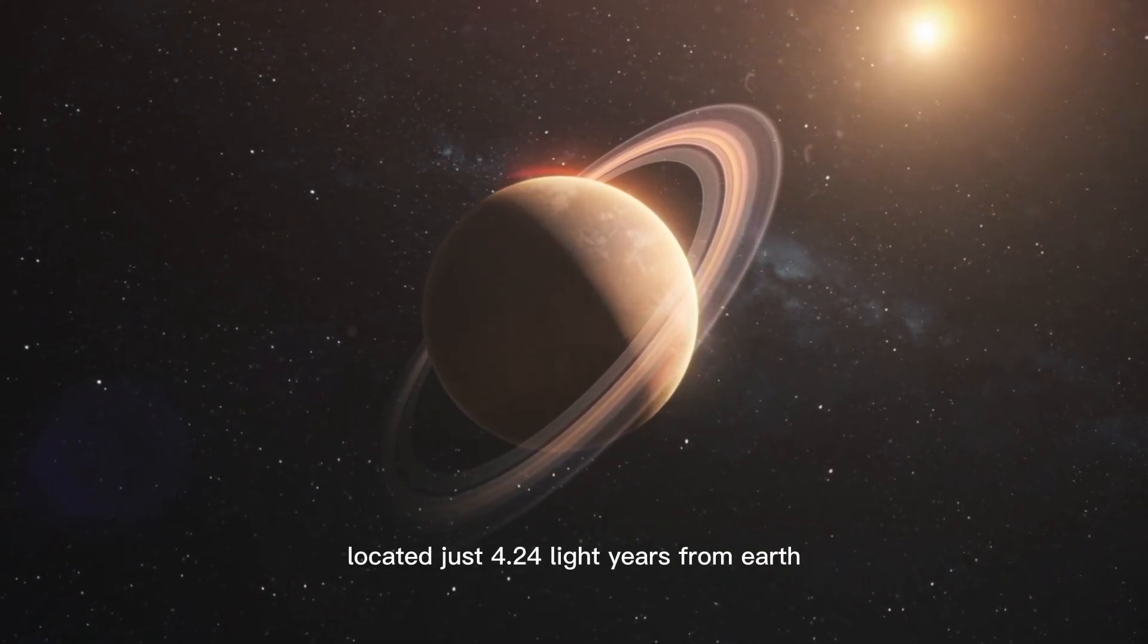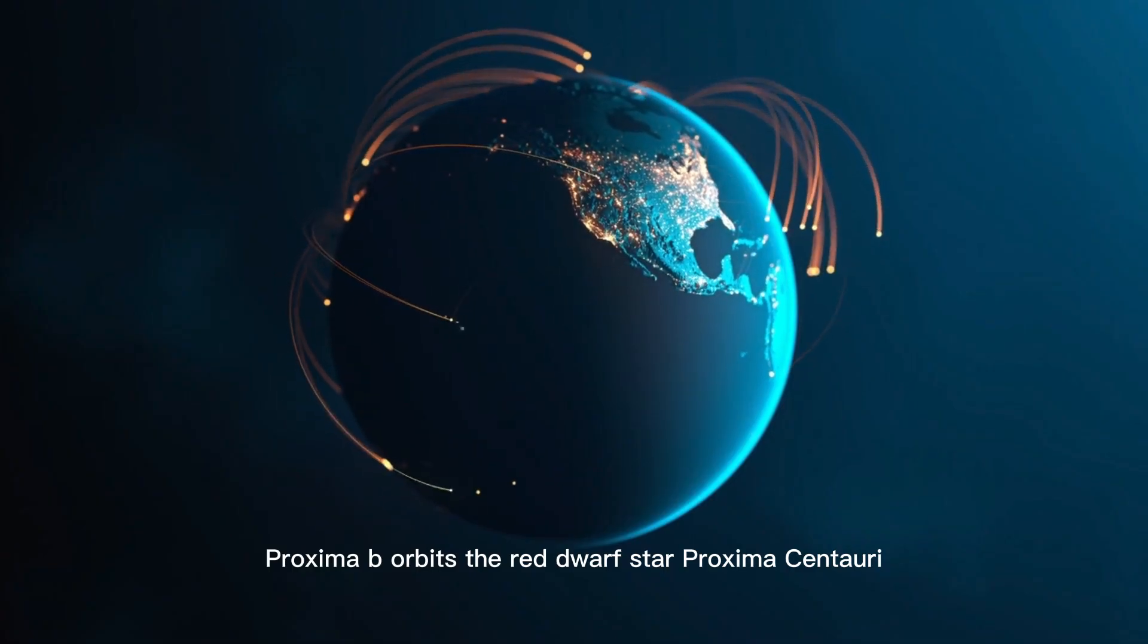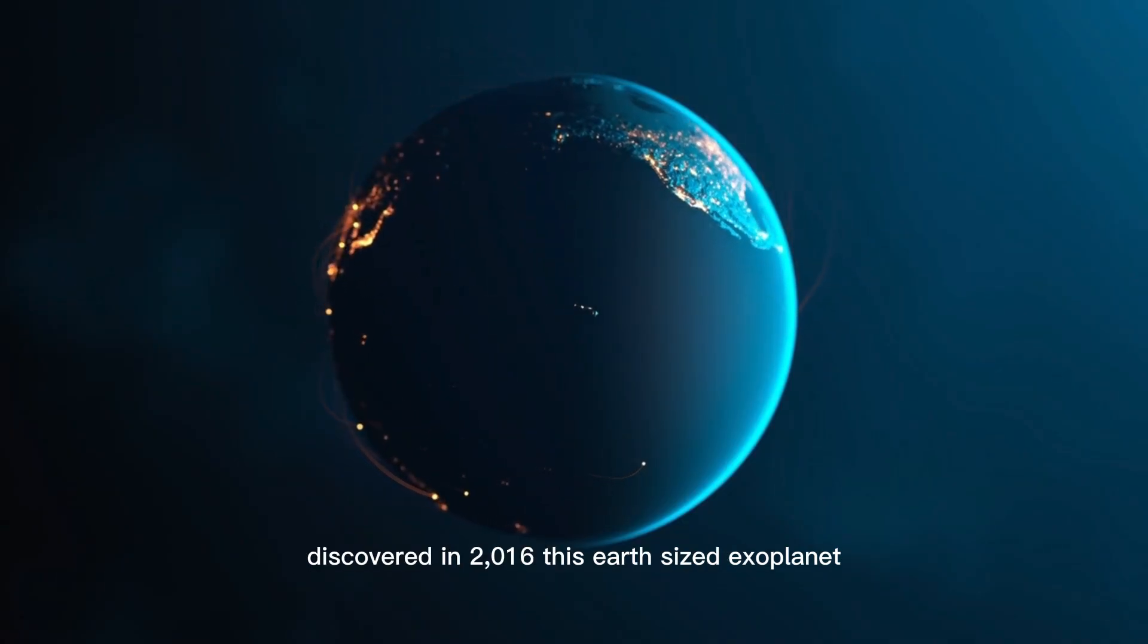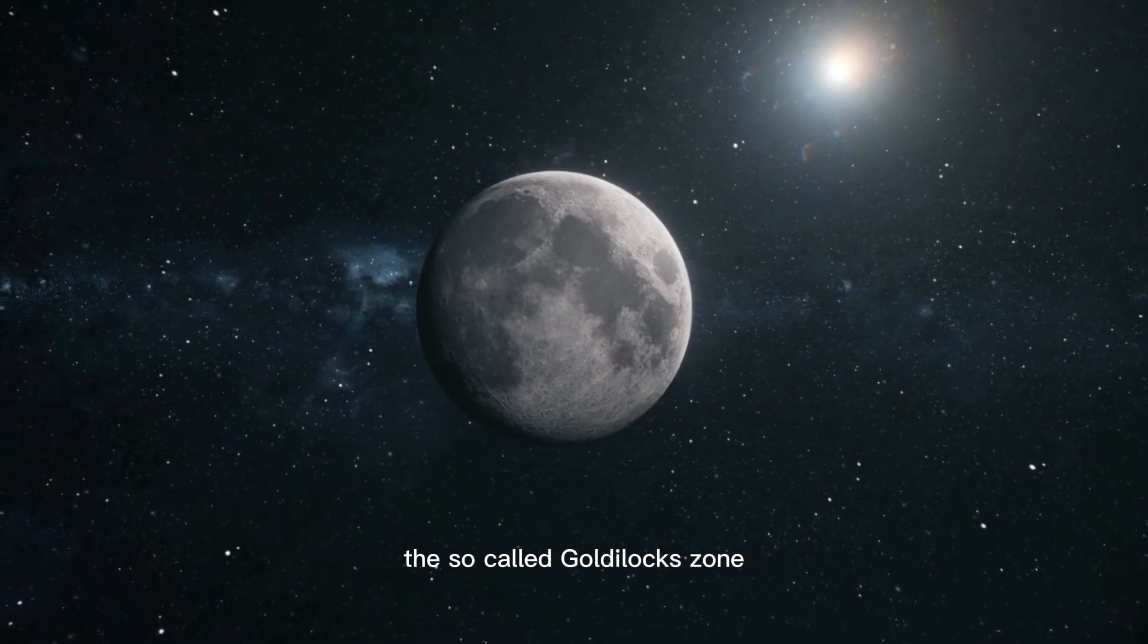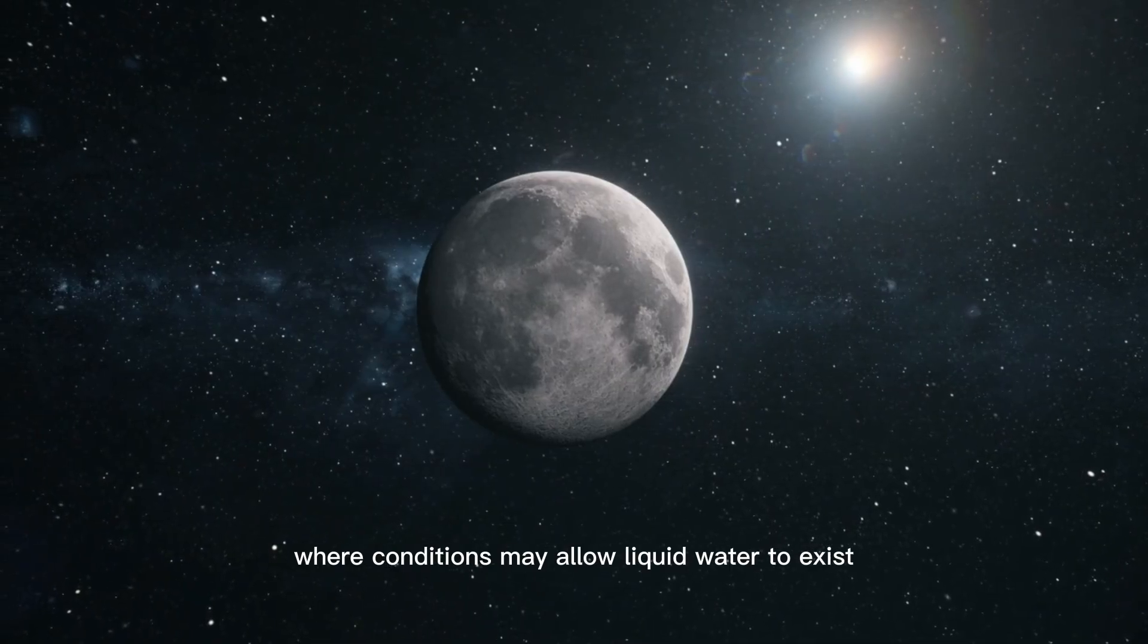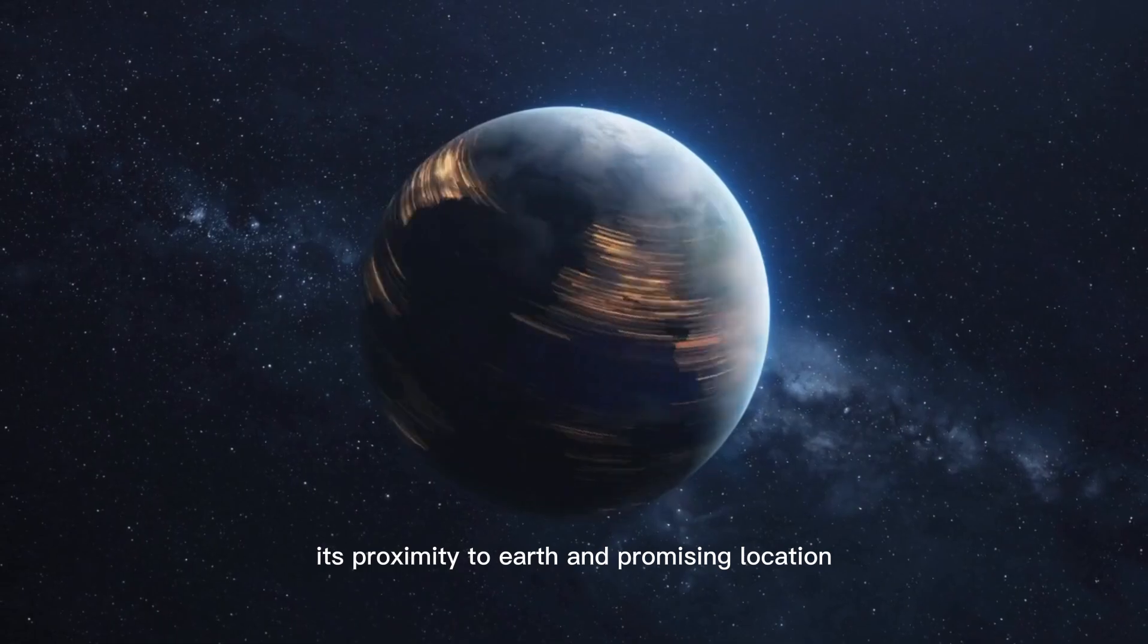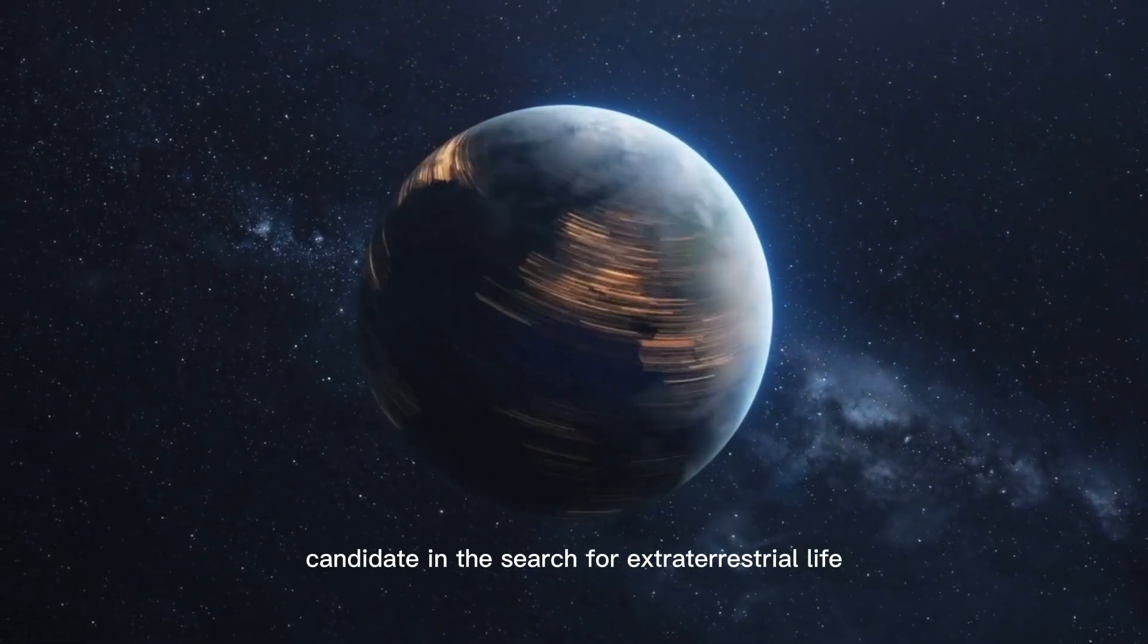Located just 4.24 light-years from Earth, Proxima b orbits the red dwarf star Proxima Centauri. Discovered in 2016, this Earth-sized exoplanet lies within the star's habitable zone, the so-called Goldilocks zone, where conditions might allow liquid water to exist, a key ingredient for life as we know it. Its proximity to Earth and promising location have made it a prime candidate in the search for extraterrestrial life.